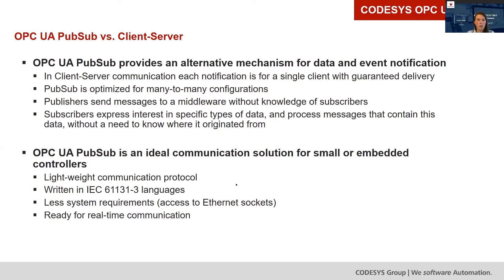Subscribers just define a certain configuration and a certain dataset, and then they can communicate with each other. The big advantage of OPC UA PubSub is that it is an ideal communication for small and embedded controllers, because in comparison to client-server, it is a really lightweight communication protocol. It is also written in IEC 61131 language, so it has the same advantage as other IIoT libraries or Fieldbus stacks — you can bring it to any Codesys controller. It has quite low system requirements; at minimum you just need access to Ethernet sockets via the SysSockets runtime component.